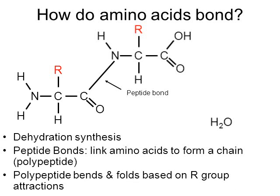The polypeptide — the big chain of amino acids — will bend, fold, and twist because the R group of one amino acid is attracted to the R group of another. When they attract to one another, it bends and twists and folds the entire chain.